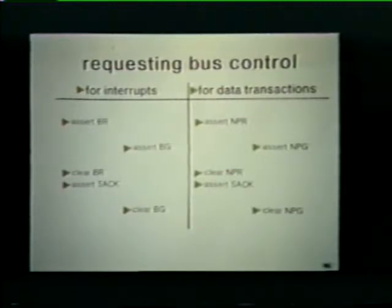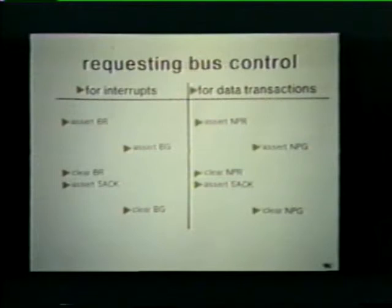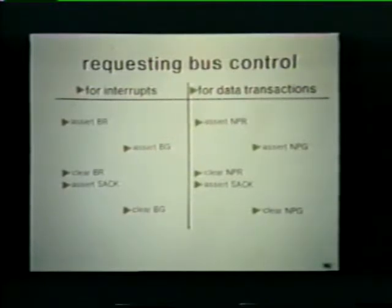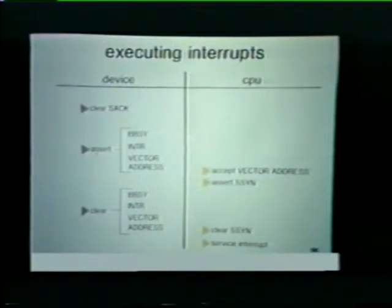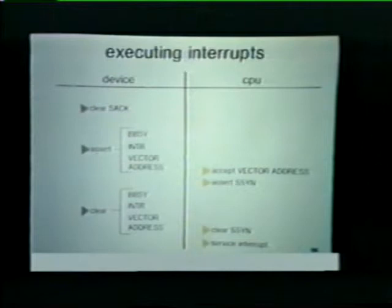Now that the device has responded, the priority control clears BG. When making a request for a data transaction, the sequence is identical. The only difference is that we assert an NPR rather than a BR, and our grant signal is an NPG rather than a BG. Now, assuming our interrupt request has been honored, the device starts the sequence by clearing SAC so other bus requests can be honored. At the same time, it asserts bus busy to take over the bus. It then places an interrupt signal on the bus along with a vector address that directs the CPU to the memory location that contains the device's interrupt vector. The CPU accepts the vector address and asserts slave sync to let the device know that the CPU has received the interrupt.